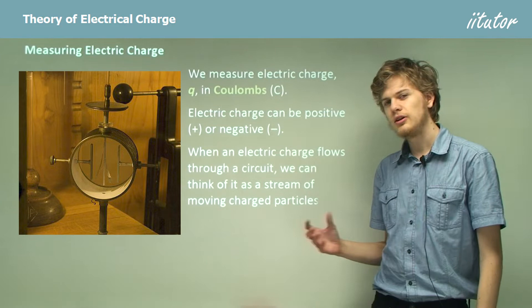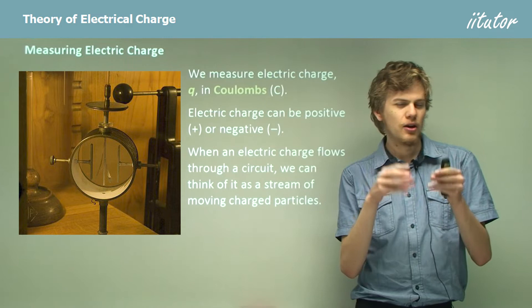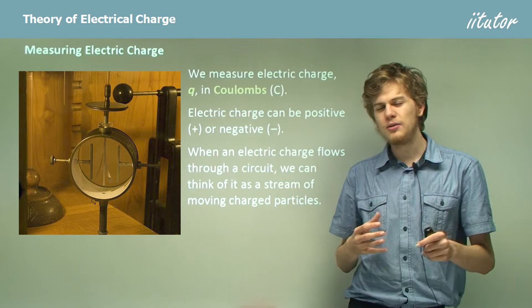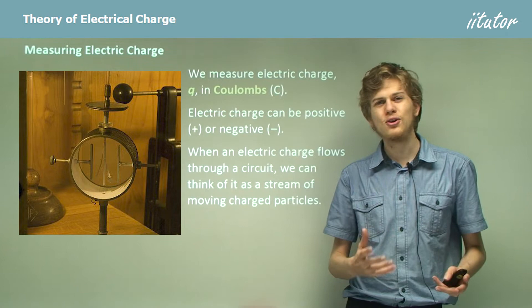Now when an electric charge passes through a circuit, we can think of it as a stream of tiny little particles, tiny little things that are moving. And each of these little particles has an electric charge. And so when all these millions and millions of tiny particles are moving through a wire, that's what creates the electric current in a circuit.